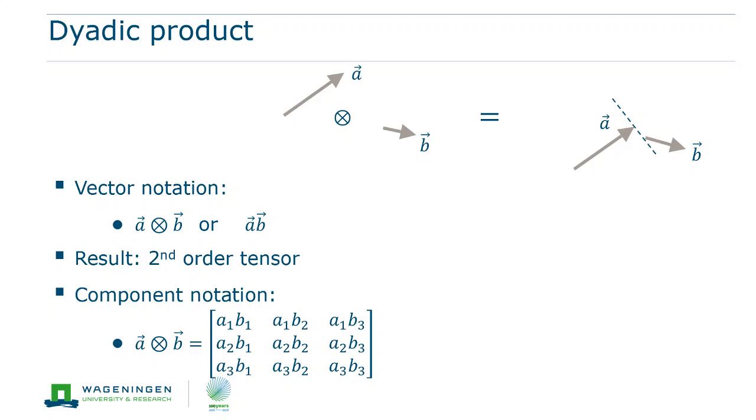We can think of it just in the way as we think about a vector that can exist without a coordinate system. The components of the second-order tensor simply consist of all possible combinations of the components of vectors a and b. Hence, the tensor has 3 times 3 equals 9 components.